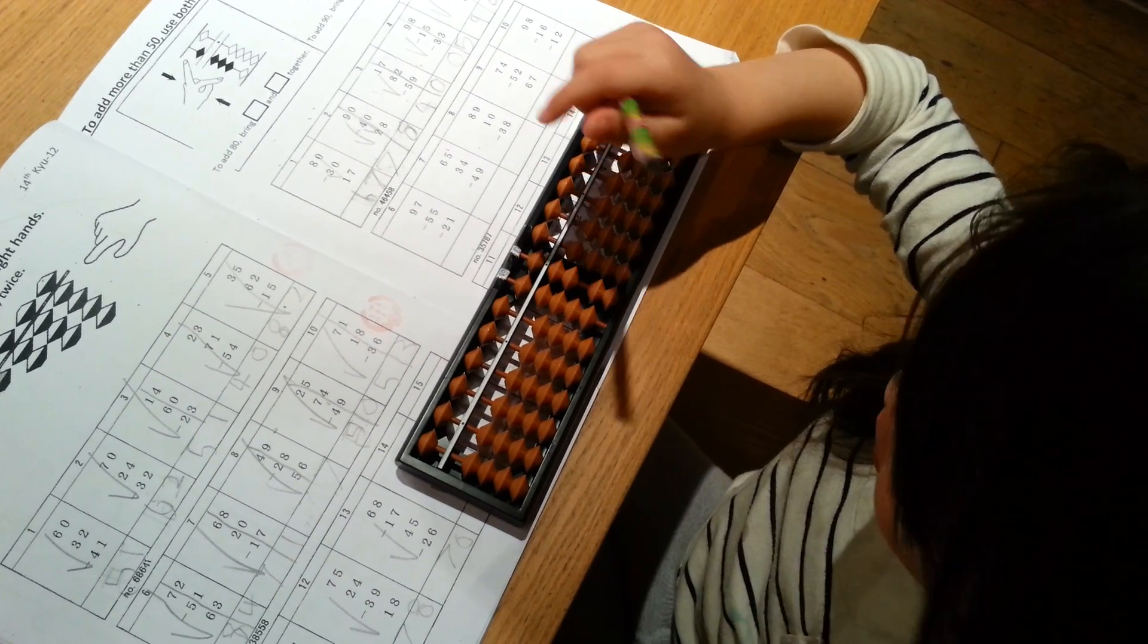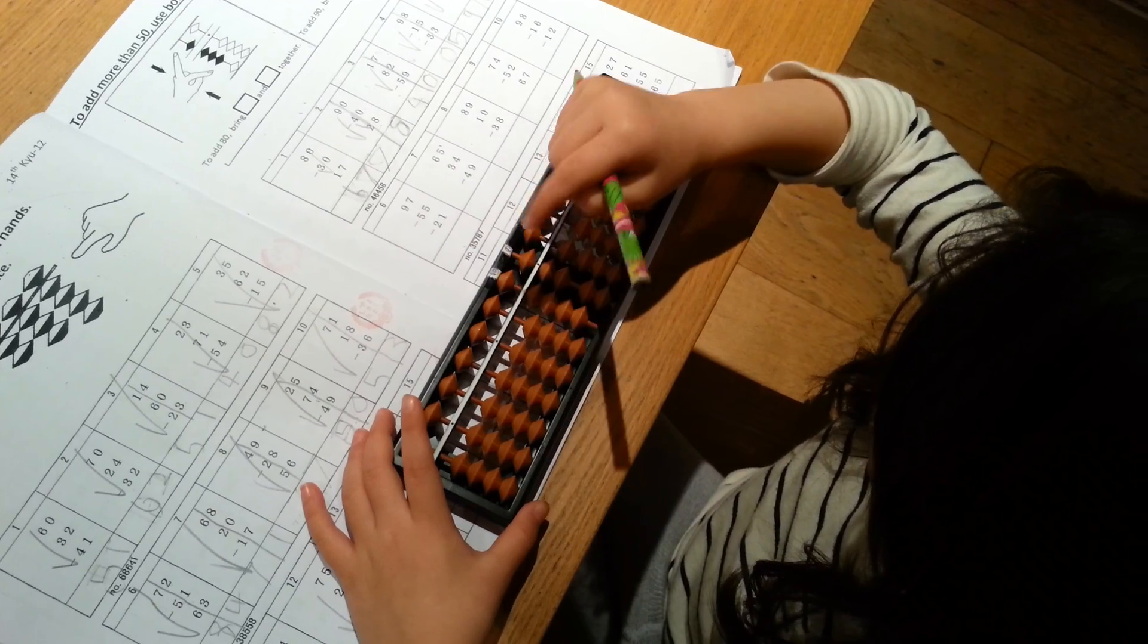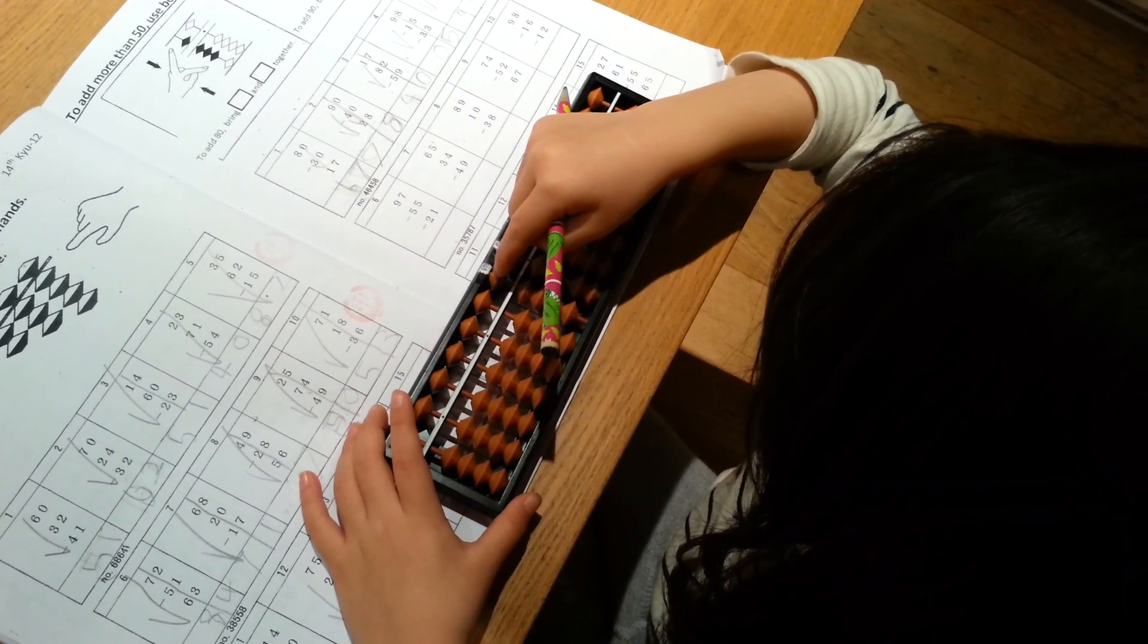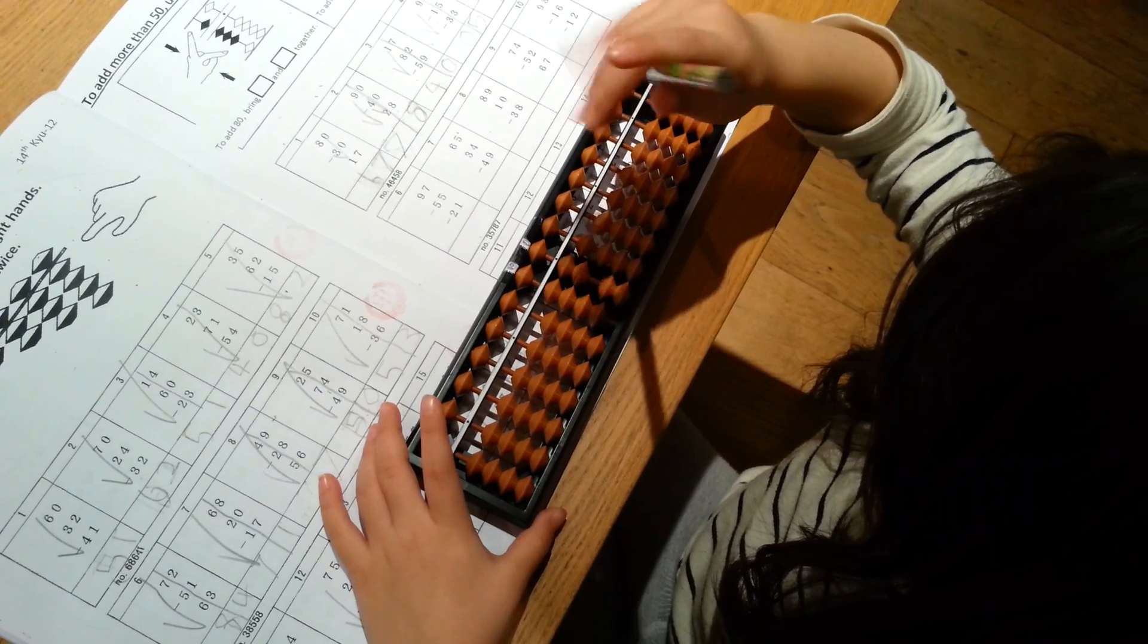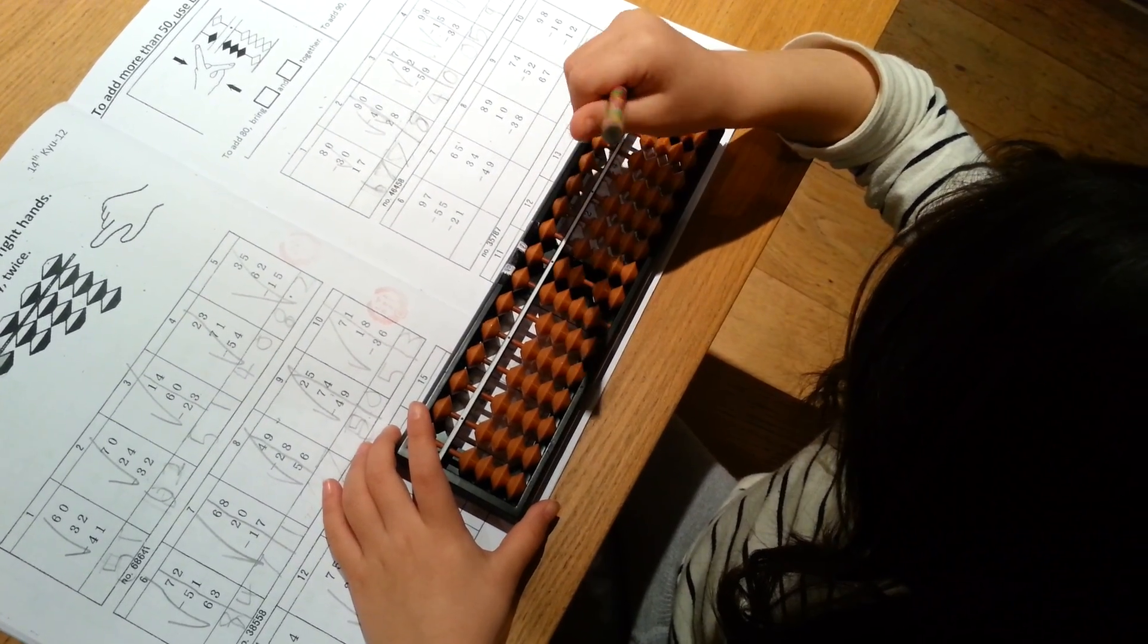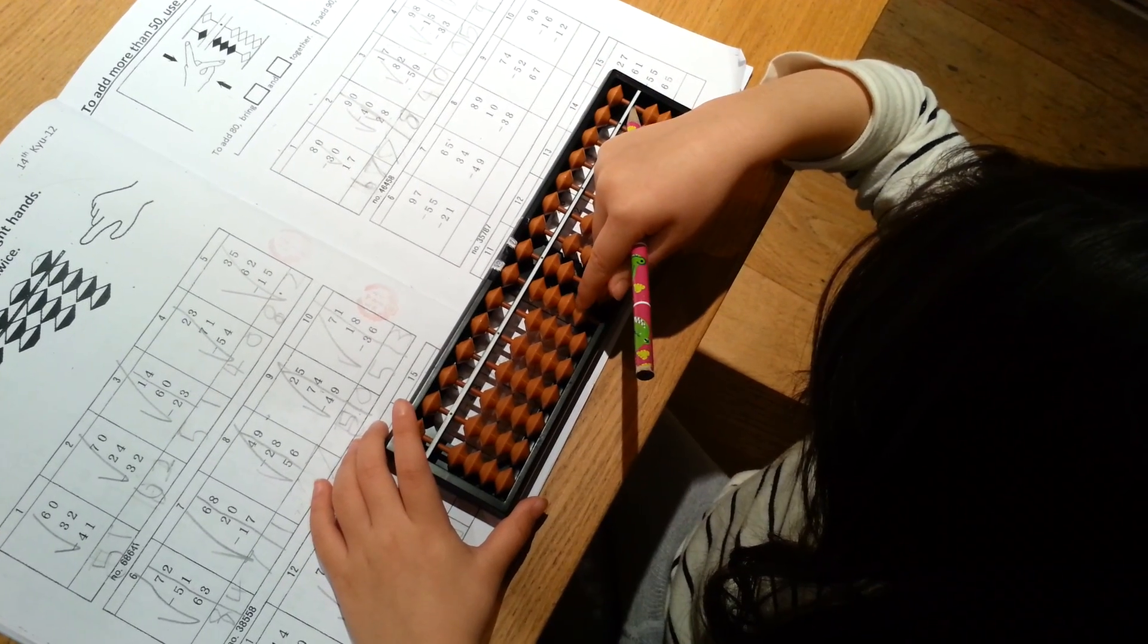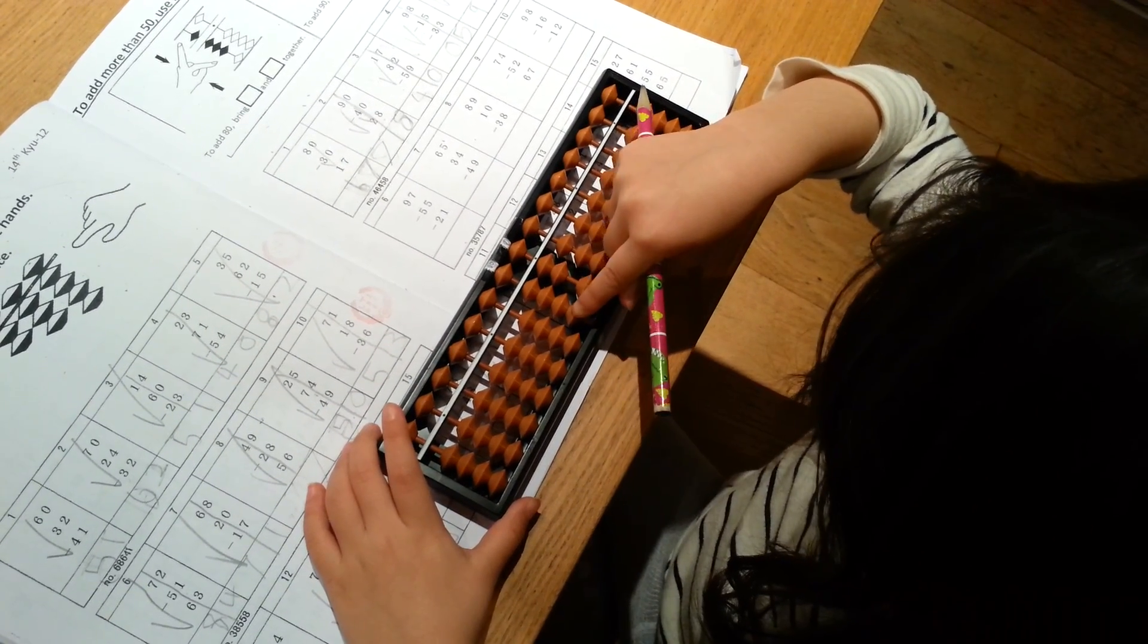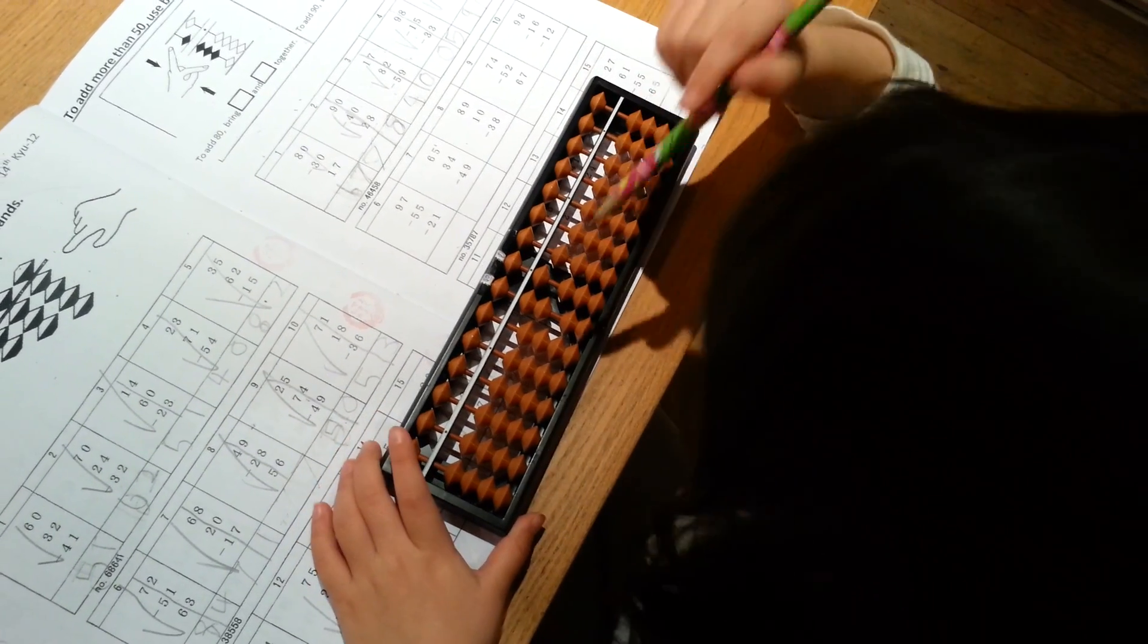Take away 55. 50 and 5, yeah. And then take away 21. Take away 20, take away 2 from the tens, yeah. And take away 1 from there.